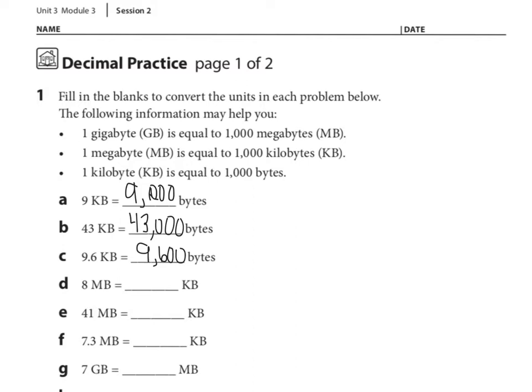D says 8 megabytes is how many kilobytes. We have to think: 1 megabyte equals 1,000 kilobytes. Therefore, 8 megabytes is how many kilobytes? Again, we're taking times 1,000, so the answer is 8,000.